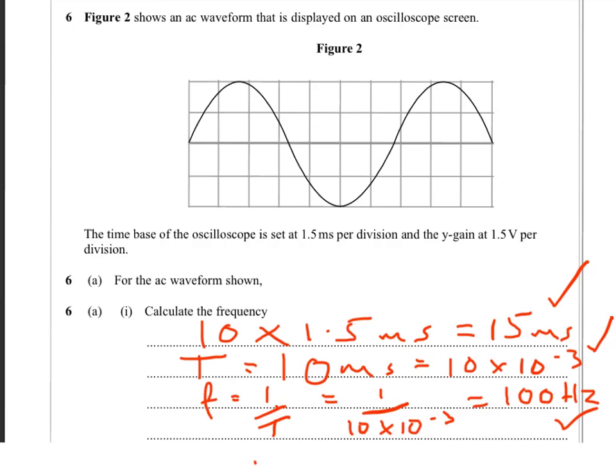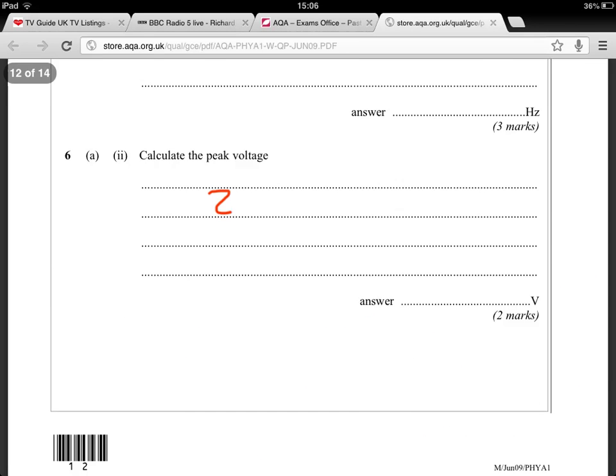The next question asks us for the peak voltage. Well, hopefully you can see there. There's two squares up. That's the peak voltage, isn't it? From the zero position up to the maximum peak. So there's two lots of 1 and a half. Okay, so we've got two lots of 1 and a half volts. Which gives us a peak voltage of 3 volts. That's a nice easy two marks.